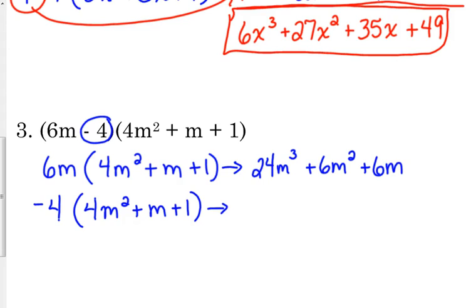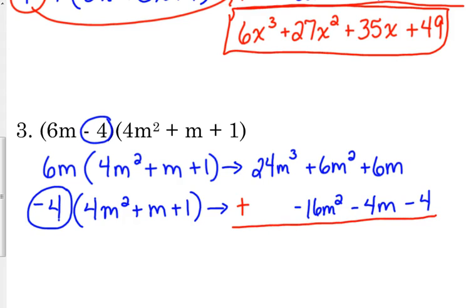Now here I've got to be careful that I'm multiplying by negative 4. Negative 4 times 4m squared is negative 16m squared. Negative 4 times m is negative 4m. Negative 4 times 1 is negative 4. Then I'm going to add these together.